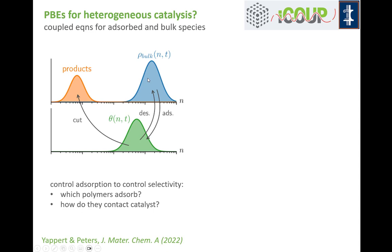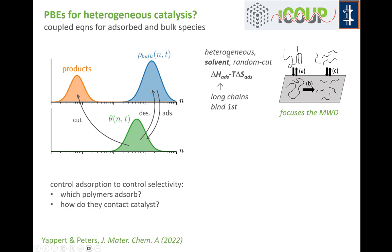Past work shows lots of examples of population balance modeling and lumped kinetics where you go straight from the bulk species distribution to the products with a pseudo-homogeneous rate constant. But what's really happening is that those species in the bulk first have to adsorb on the surface of the catalyst. The way they adsorb — and the preferential adsorption of different molecular weights — determines what is going to be cut into products. If you want control over product selectivity, you have to control which polymers from your bulk distribution are preferentially adsorbed and how they contact the catalyst.